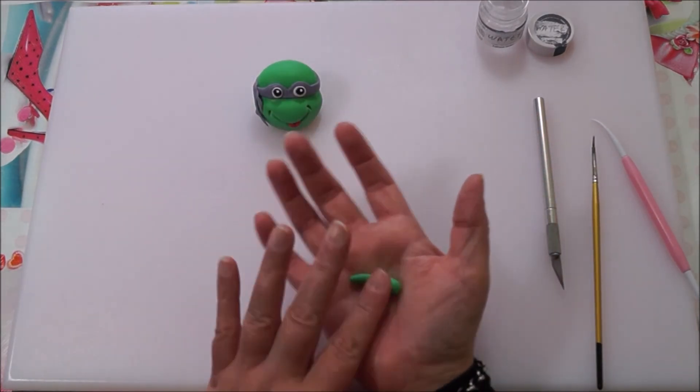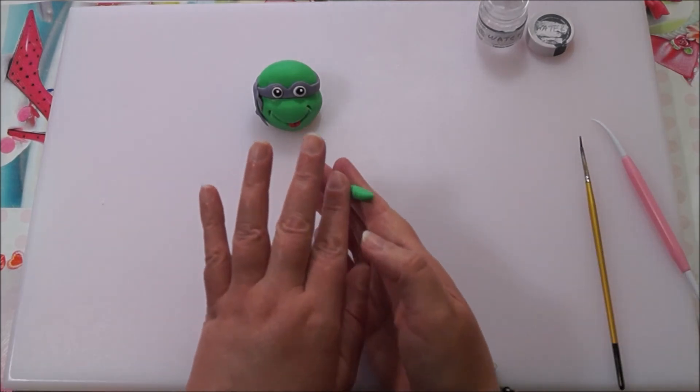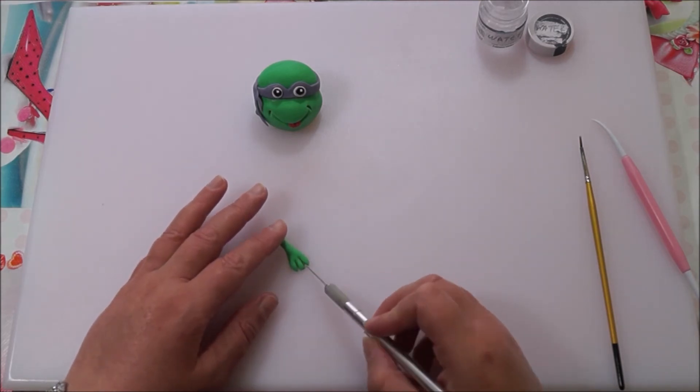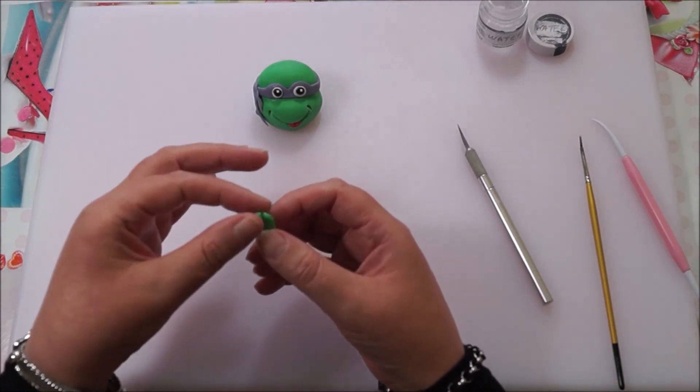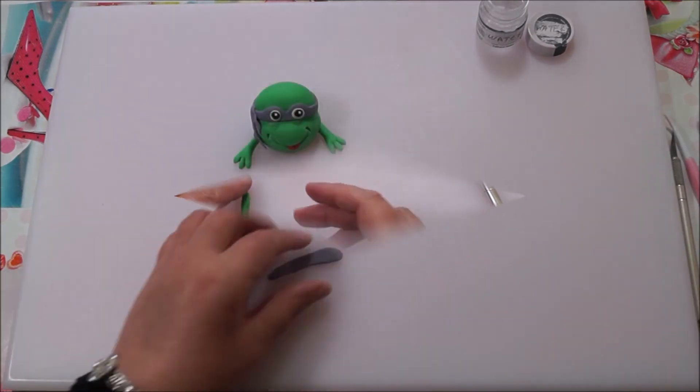Now I'm going to make the arms. The arms on these Teenage Mutant Ninja Turtles were just popping over the edge of the sewer, so I'm making these arms and setting them to one side until they're ready for the cake. Just take a piece of fondant, taper it at one end, squash it down, and cut it into three digits.